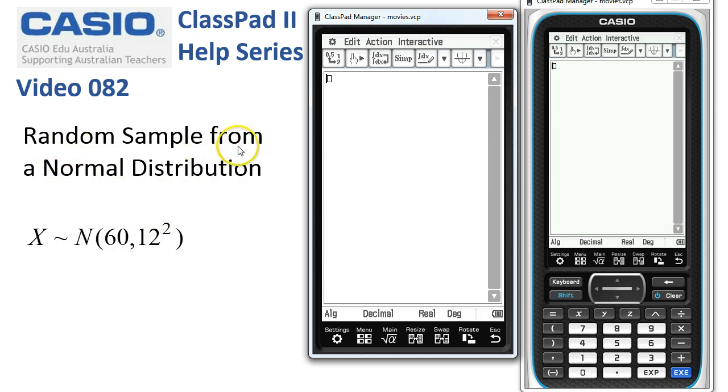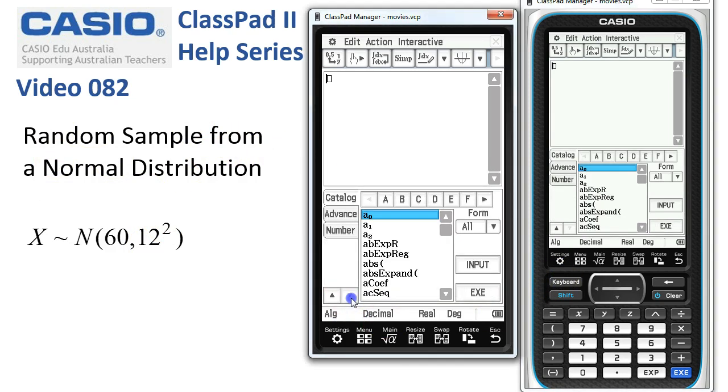So to take this random sample, we're going to get the keyboard up and head down to the catalogue of functions. And we're looking for the ones beginning with R, so I'm tapping across here to the ones beginning with R.